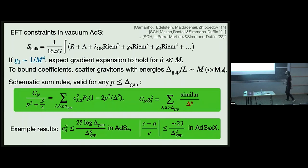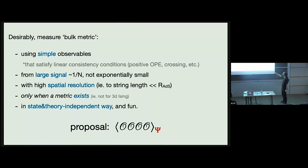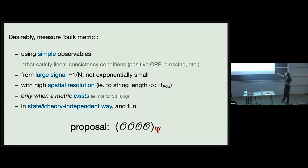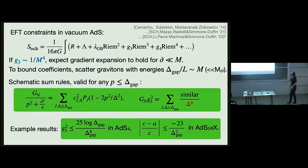This is one slide where I try to summarize the bootstrap approach to the stress tensor four-point functions and the results we've obtained in the past year. For example, if you think about the two-point function of heavy operators, in some approximation it's controlled by the geodesic length of some Euclidean geodesic — that's an example of something that's not great for us because it's an exponentially small signal. Suppose you want to constrain a bulk effective theory: let's start with Einstein plus some higher derivative corrections.